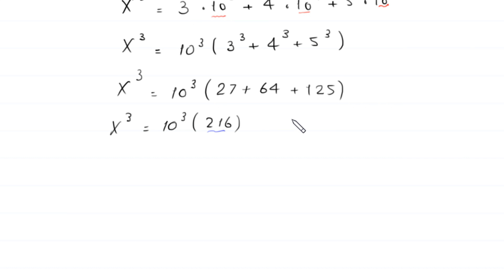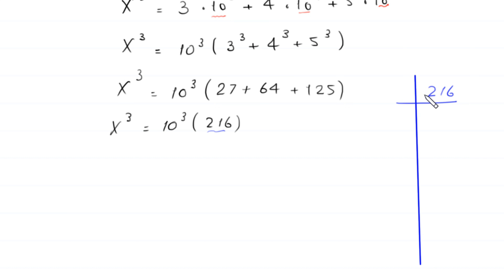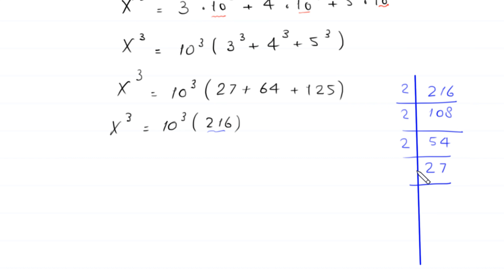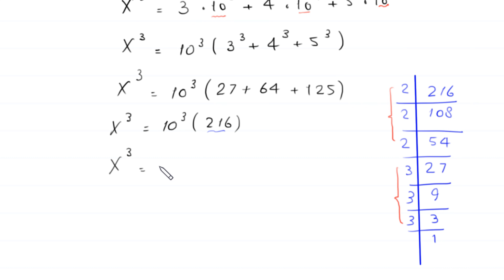Now if we factorize 216: 216 is divisible by 2, giving 108; 108 is divisible by 2, giving 54; 54 is divisible by 2, giving 27; and 27 is divisible by 3, giving 9; 9 is divisible by 3, giving 3; and 3 is divisible by 3, giving 1. So 216 equals 2 cubed times 3 cubed. This means x cubed is equal to 10 cubed times 2 cubed times 3 cubed.